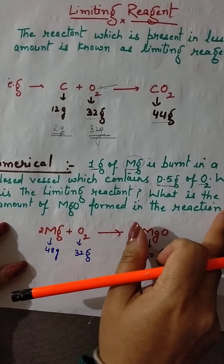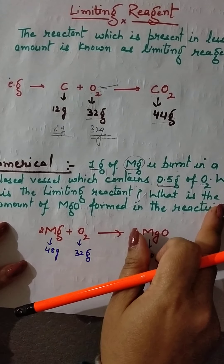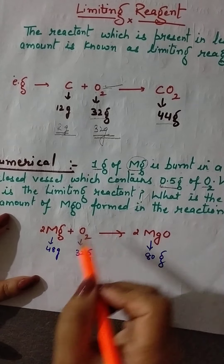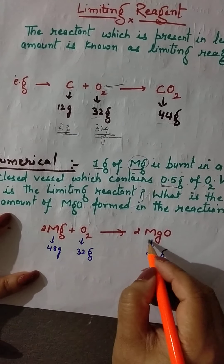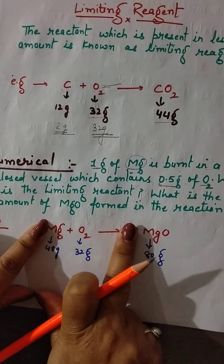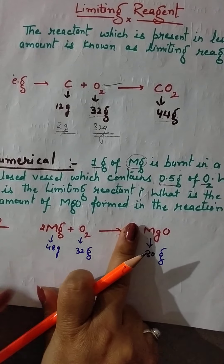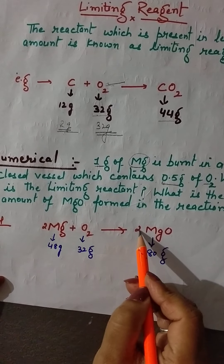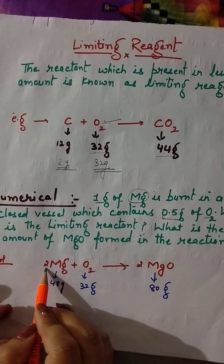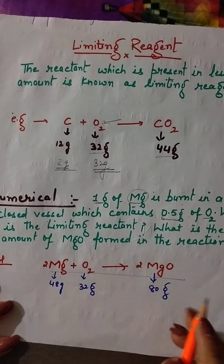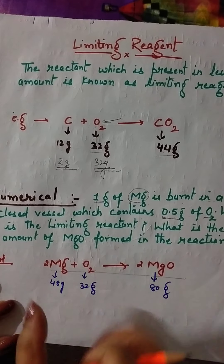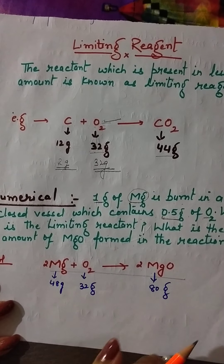First, write the reaction: Mg + O2 → MgO. Then balance it. You have to multiply O2 by 2 and similarly multiply magnesium by 2, giving: 2Mg + O2 → 2MgO. This is the balanced chemical equation.